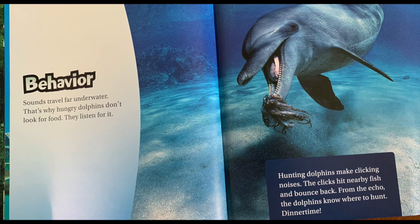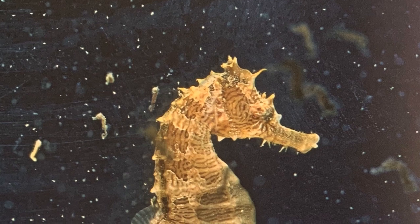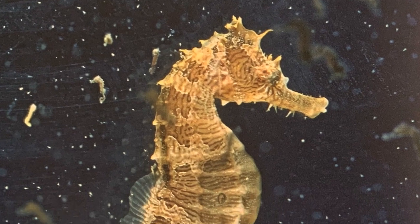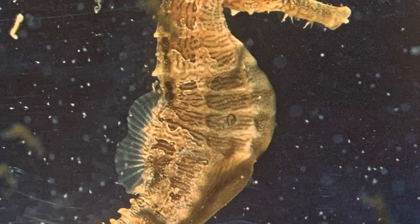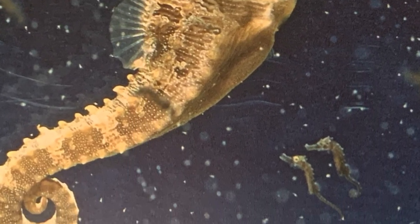The next heading is called Behavior. Sounds travel far underwater — that's why hungry dolphins don't look for food, they listen for it. Hunting dolphins make clicking noises; the clicks hit nearby fish and bounce back. From the echo, the dolphin knows where to hunt. It's dinner time! A father seahorse holds his mate's eggs inside a special pouch. In his pouch, the eggs are safe. The tiny baby seahorses hatch and swim away. Goodbye, Dad.